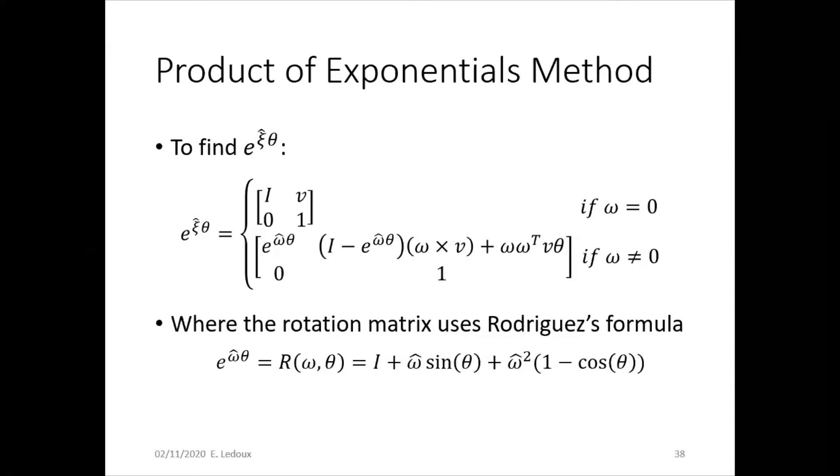If omega is not zero, so if you do have rotation, then you have Rodriguez's formula which is the rotation matrix part. So that will end up to be a 3x3 matrix with this formula below. And then you will have the position part of it being a 3x1 in this formula.